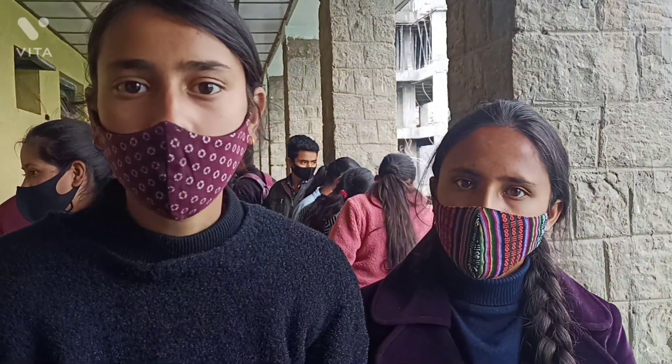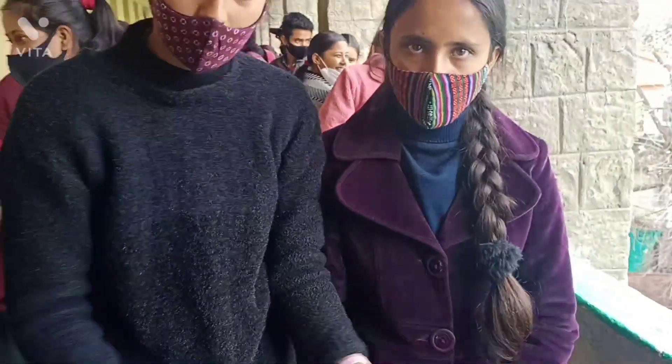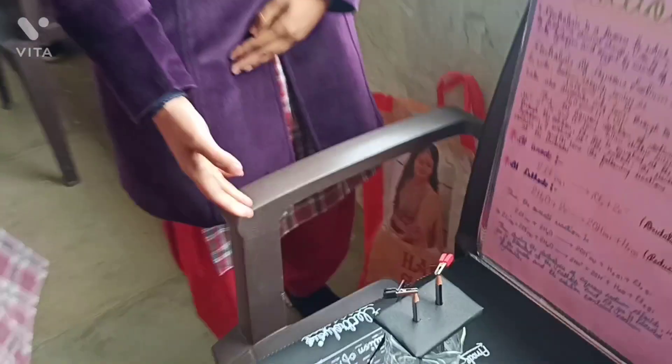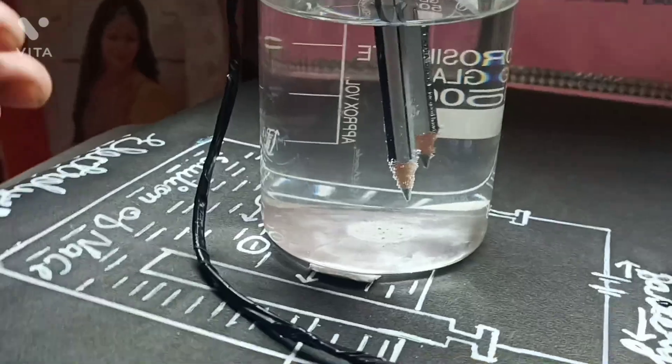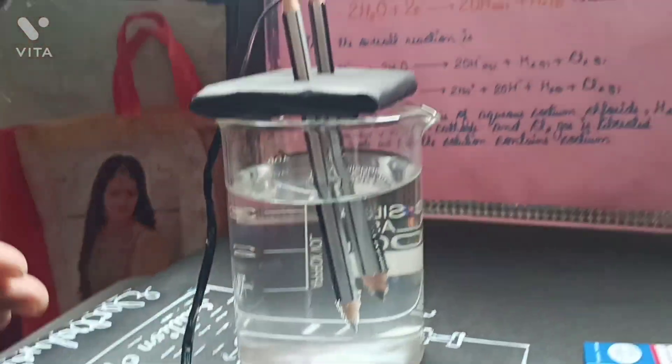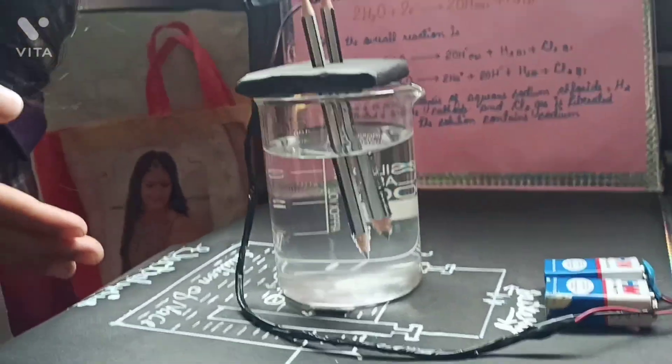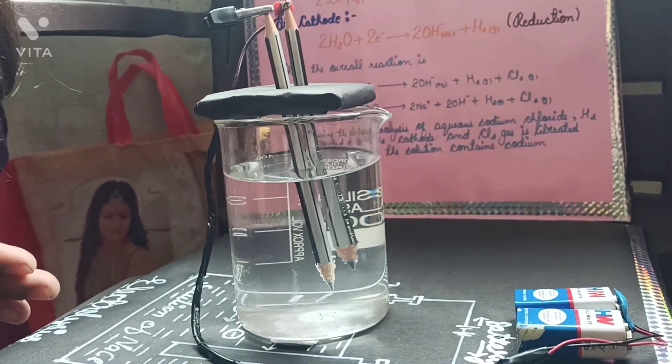When an electrolyte dissolves in water, it will decompose. In this solution of sodium chloride, the sodium chloride dissociates into Na+ and Cl-, and the water also dissociates into H+ and OH- ions.